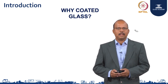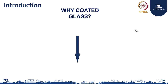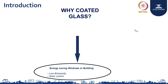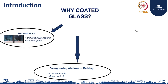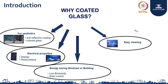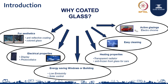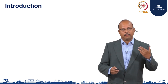Why coated glass? What are the value additions on glass that is achieved by coatings? Let us have an overview. First, functionality can be in terms of energy savings for buildings and exterior glazing applications. Second could be for better aesthetics — anti-reflective and color glass. We can achieve good electrical properties for display and photovoltaic applications. Glass can also be easy to clean — that is an added functionality by coatings. There can be heating properties for anti-fog applications, and active glazings that respond to atmospheric conditions. These are the functionalities achieved by coatings on glass.